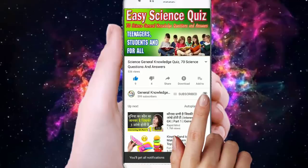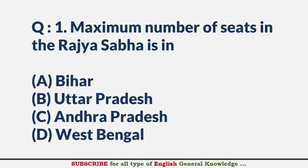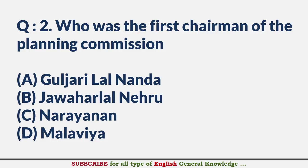Maximum number of seats in the Rajya Sabha is in — Answer B: Uttar Pradesh. Who was the first chairman of the Planning Commission? — Answer B: Jawaharlal Nehru.